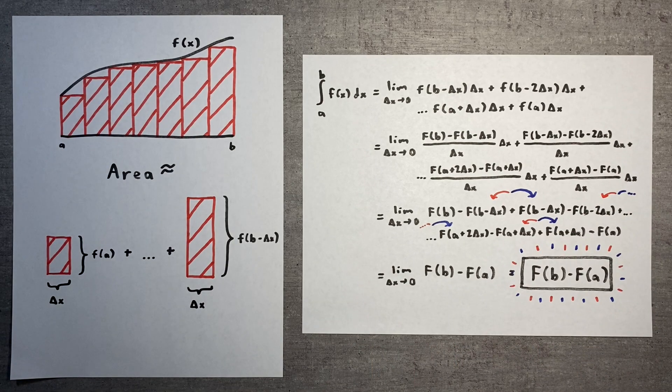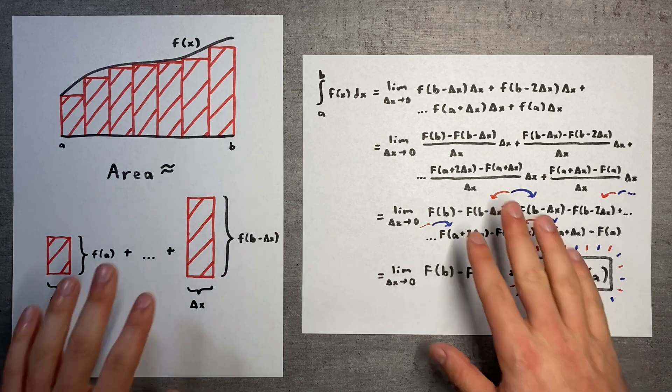This proof really captures how surprising it is that big F of b and F of a are enough to determine the area underneath little f, despite the complexity of little f between a and b. Somehow, our giant sum turns into something simple. This is why the second fundamental theorem of calculus is so useful and beautiful.